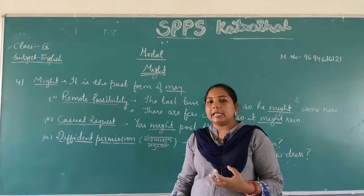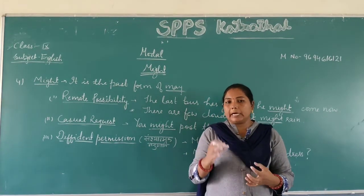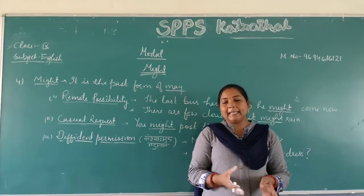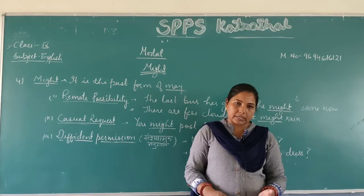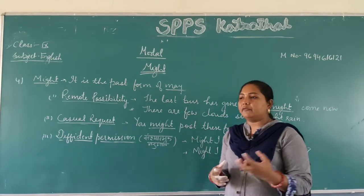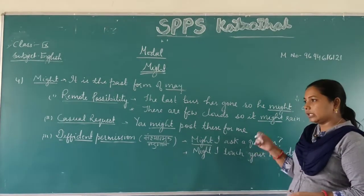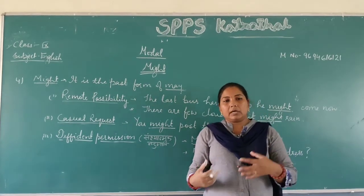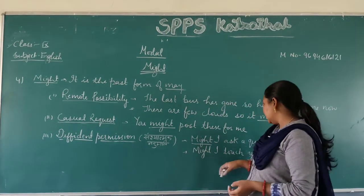The third use is diffident permission — seeking permission with hesitation. If you want permission but are unsure whether it will be granted or not, we use might. For example: might I ask a question? Or: might I touch your new dress?